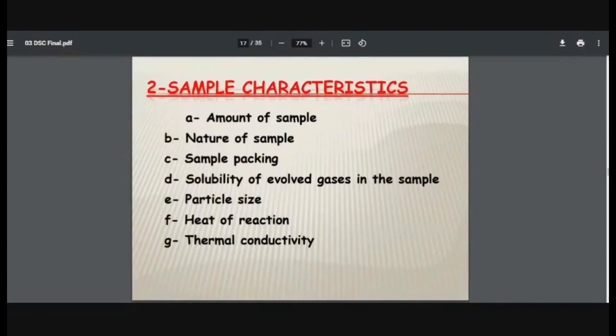Then there are sample characteristics: nature of the sample, whether it is solid, liquid, whether it is crystalline, whether it is amorphous. Then sample packing, whether it is compactly packed, loosely packed, what is its porosity. Then solubility of evolved gases in the sample. Now why is solubility important? Suppose it is a liquid and evolved gases are getting solubilized. So solubility many times is endothermic or exothermic process. So you are getting evolution of gas, one thing. So that is accompanied by solubilization. So two processes happening simultaneously. So you may observe unusual peaks. Particle size we have seen already. Heat of reaction, endothermic or exothermic, and thermal conductivity of the sample. If it is good conductor of heat, you will get uniform heating, you will get sharp peak. If it is not that good thermal conductor, then the peaks may not be sharp.